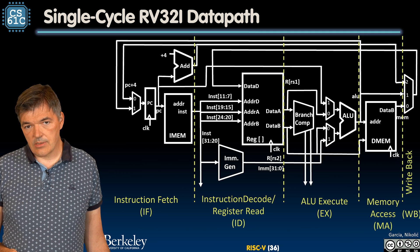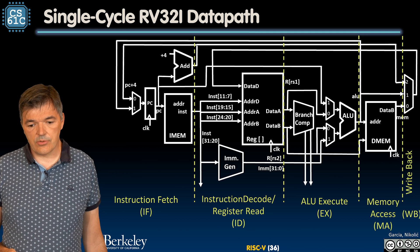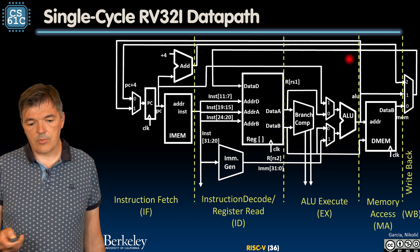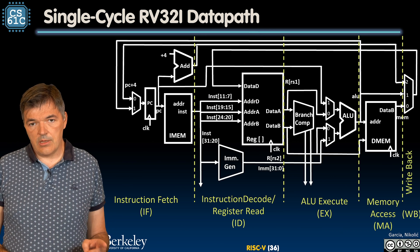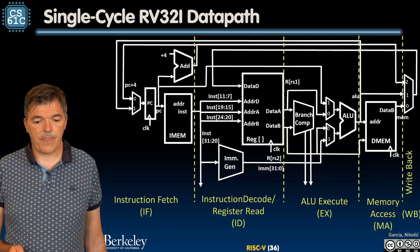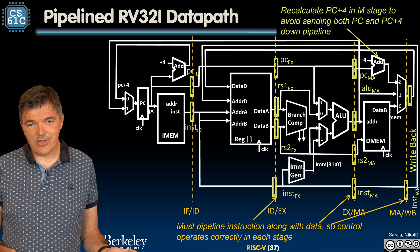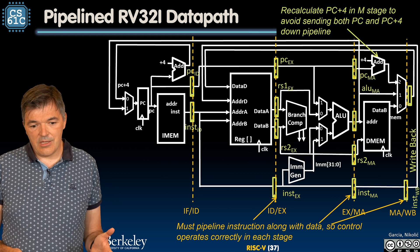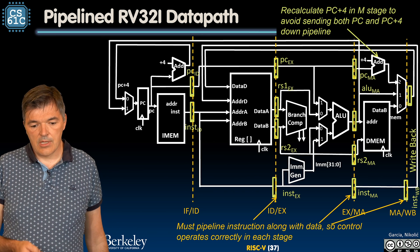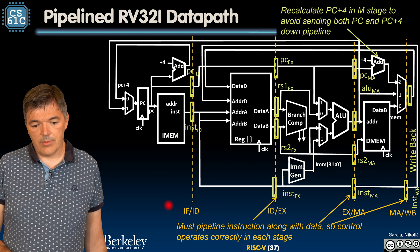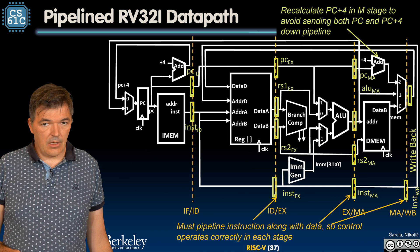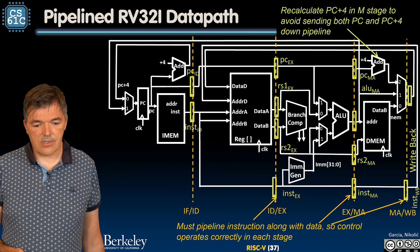We move on to the memory access phase if we are accessing memory in loads or stores. When we are done with that, we move on to write back, where we write back into the destination register in the register file on the rising edge of a clock. To pipeline, we simply insert registers at appropriate places. On the boundary between each of these execution phases, we put registers conveniently labeled IFID, IDEX, EXMA, and MAWB, separating the various execution phases.